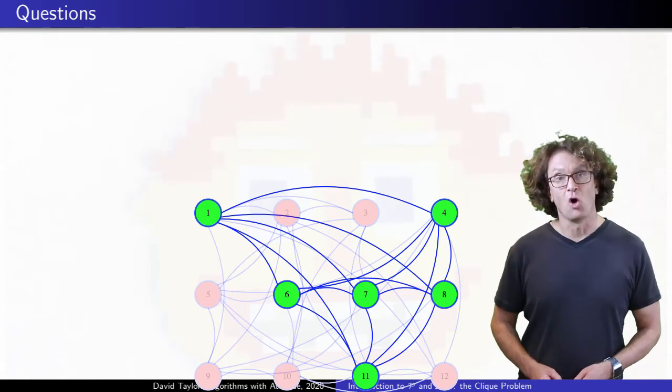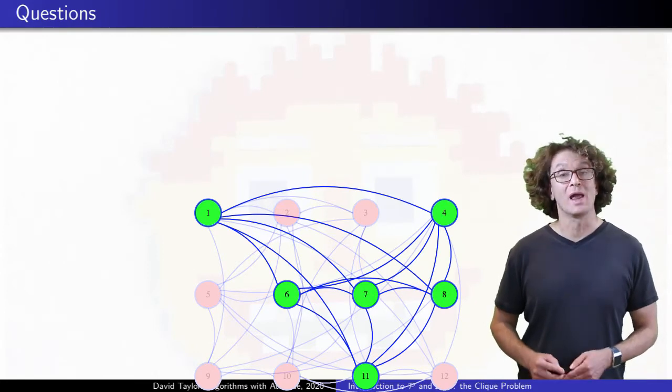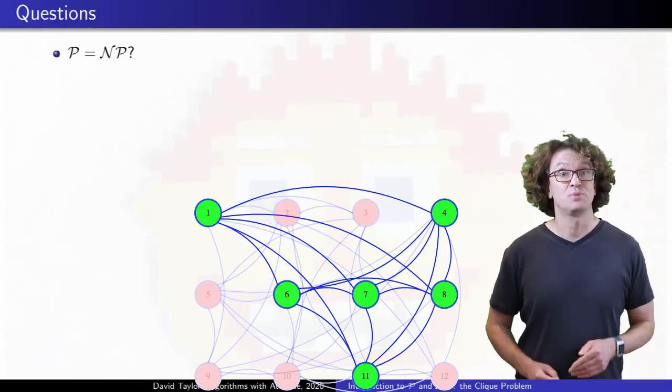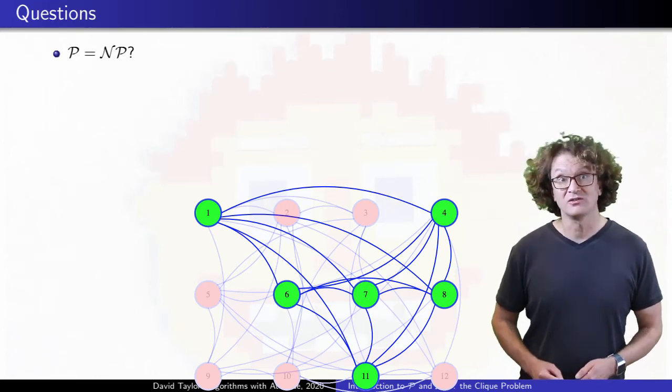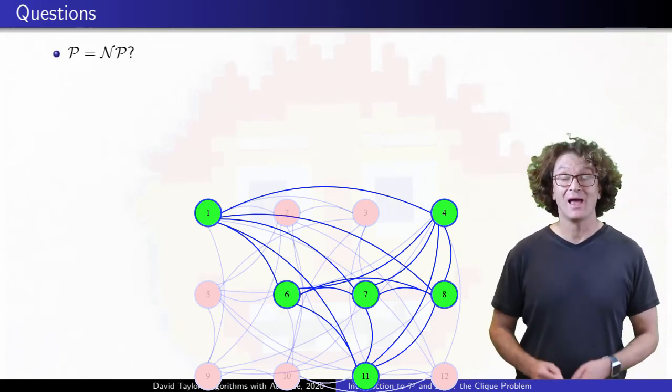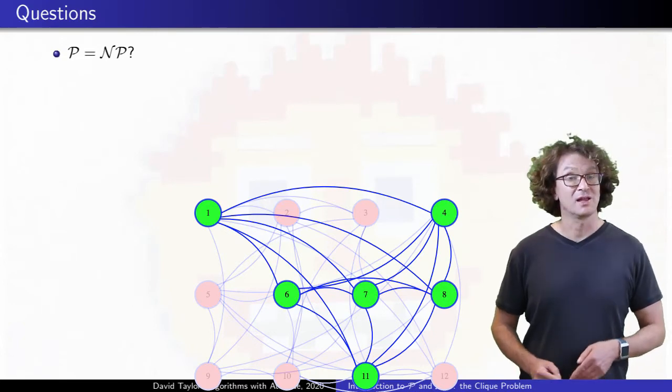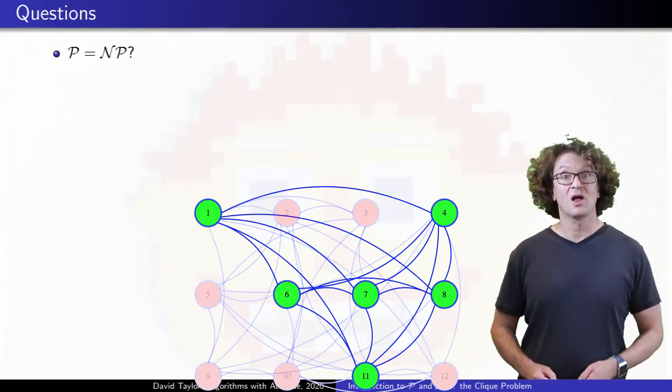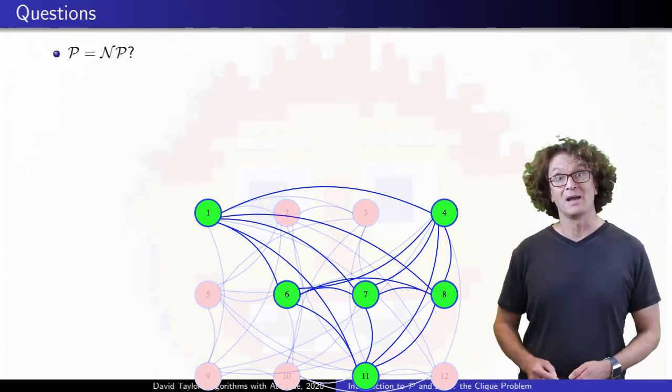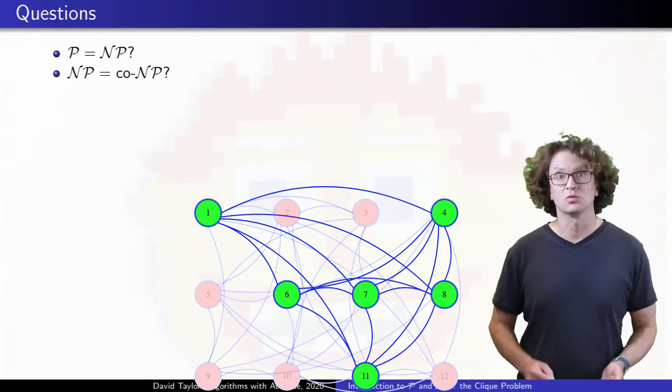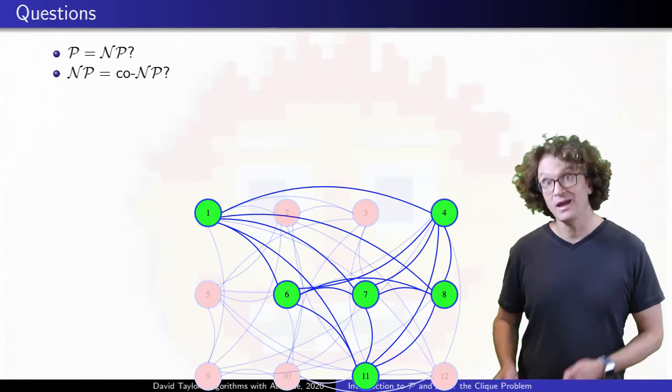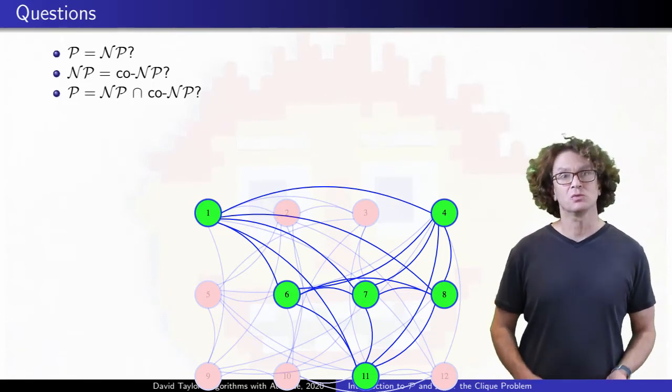There are lots of open questions about complexity classes, and the granddaddy of them all is whether or not P is equal to NP. I think the general consensus is that it isn't, but that hasn't been proved. If they aren't equal, there are still other related questions that might still need to be answered, like whether or not NP equals co-NP, and if they aren't equal, does P equal their intersection?